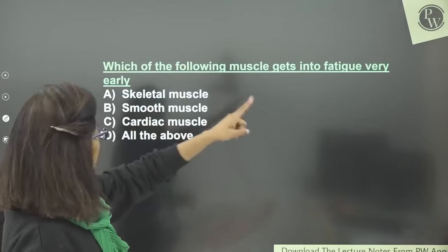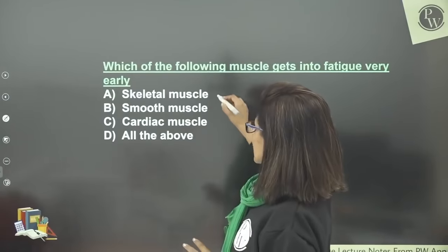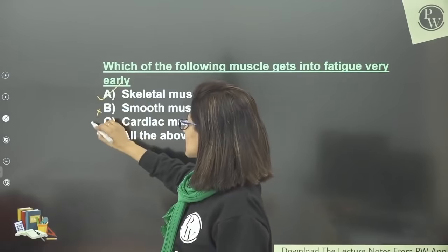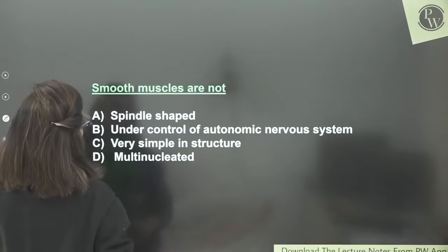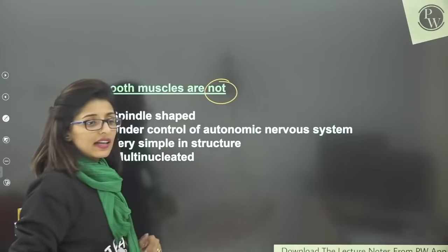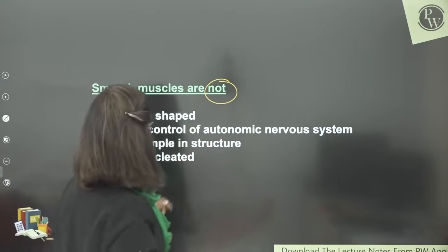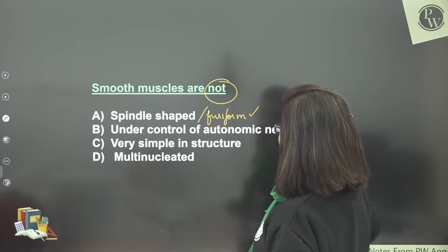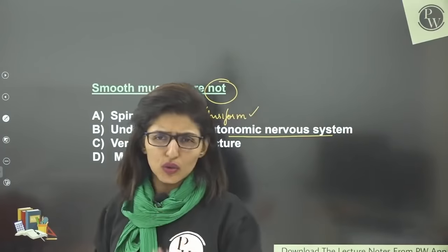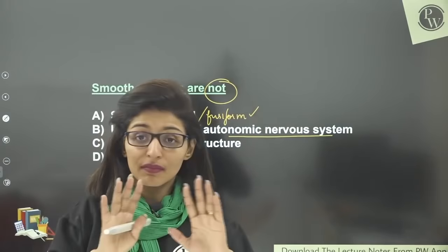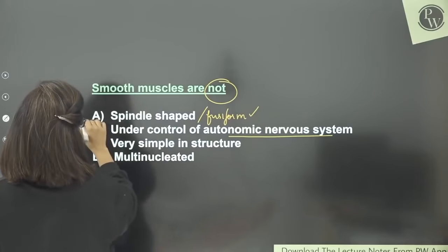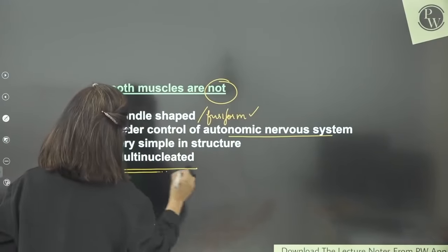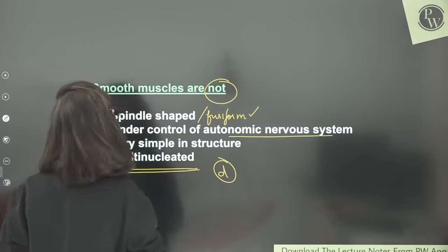Q: Which muscle gets into fatigue very early? Options: skeletal muscle, smooth muscle, cardiac muscle, or all of the above? Smooth muscles and cardiac muscles do not fatigue — only skeletal muscles do. Answer: skeletal muscle. Q: Smooth muscles are NOT — answer D — multi-nucleated. They are single-nucleated with a central nucleus. They are spindle/fusiform shaped, under autonomic nervous system control, and very simple in structure. Q: Cardiac muscles have characters of both striped and unstriped muscles — answer is both A and B (C). Their structure is like striped muscles and they function like unstriped (smooth) muscles.